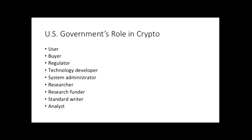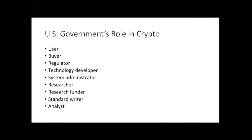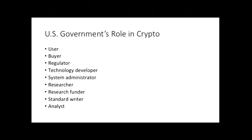The role of the U.S. government with respect to cryptography is really very multifaceted. The government is a user of cryptography in building services and in its own internal operations. It's a buyer — the U.S. government buys a lot of crypto-related products. It's a regulator, meaning the government regulates many businesses that do things relating to crypto. For example, when I was at the FTC, we dealt with issues about what companies did to protect sensitive consumer data, and in some cases asked whether there might be an obligation to apply encryption.